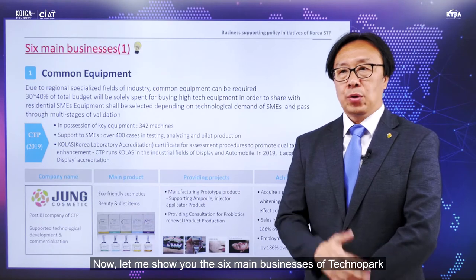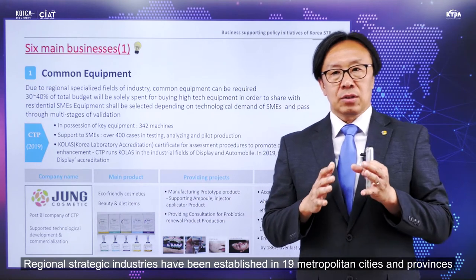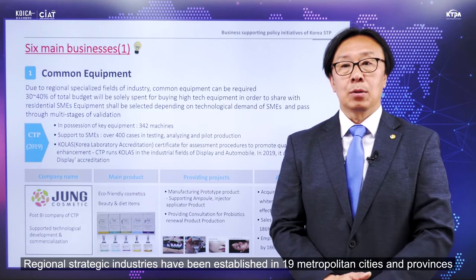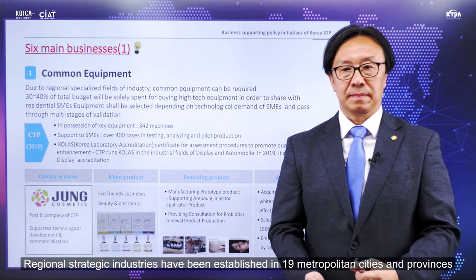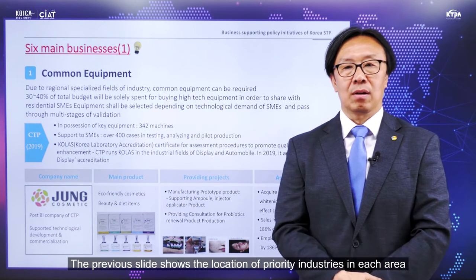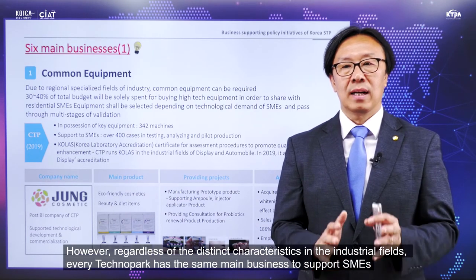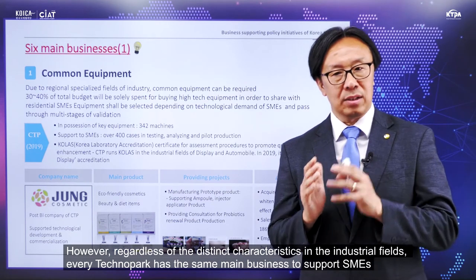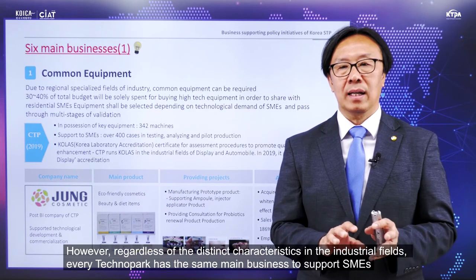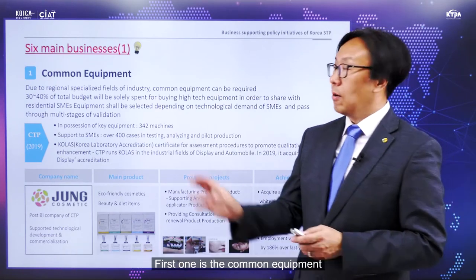Now let me show you the six main businesses of Technopark. Regional strategic industries have been established in 19 metropolitan cities and provinces. Regardless of distinct characteristics in industrial fields, every Technopark has the same six main businesses to support SMEs.